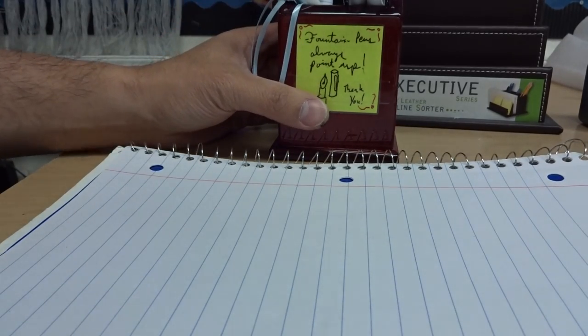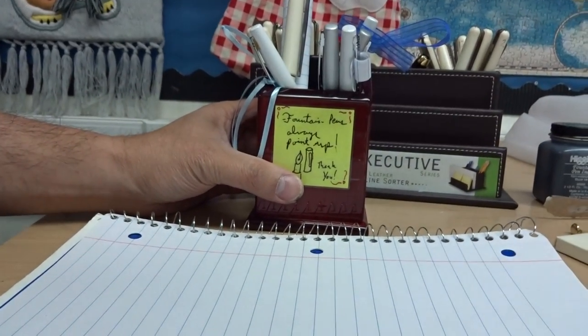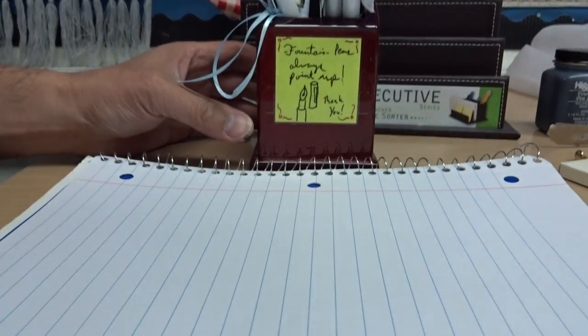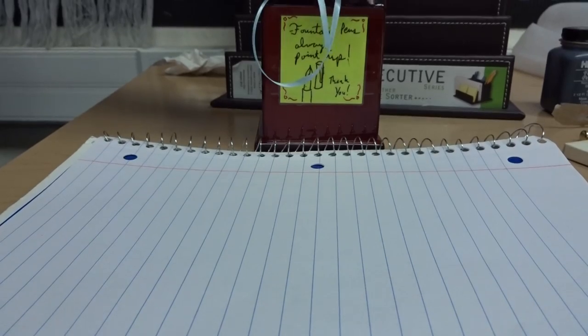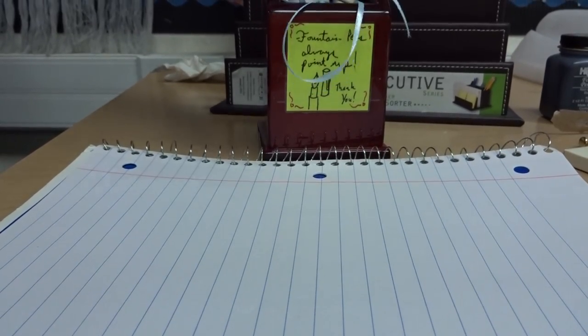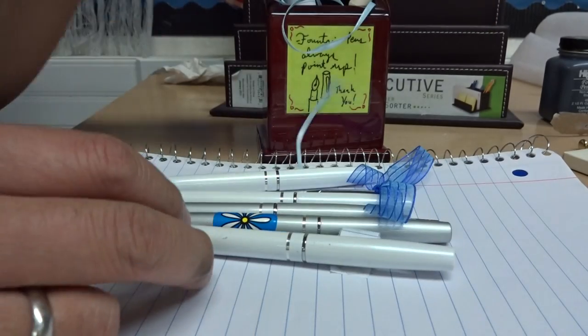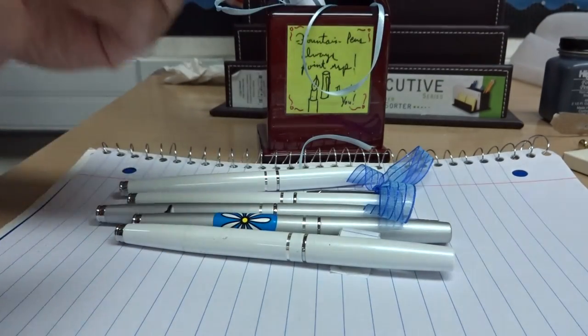All right, this right here is one of the fountain pens that are on one of the fountain pen cups that are on my students' desks. And these are the other $1.50 Daiso pens, and usually they have more of these models than the cheesy Riviera model.